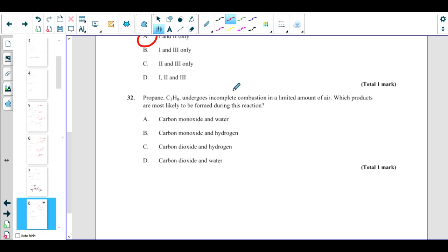Propane undergoes incomplete combustion in a limited amount of air. Which product? Again, this is limited propane. Whenever, whatever product it is, if it's incomplete combustion, it is always carbon monoxide and water. Okay guys, that's all. These are the questions which I had from the past papers of Chapter 10. I hope you understood. Thank you so much for your time. See you next time, take care.